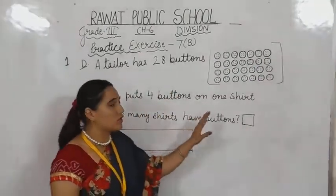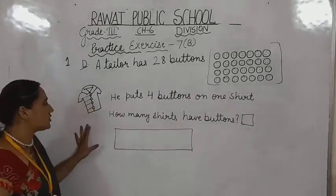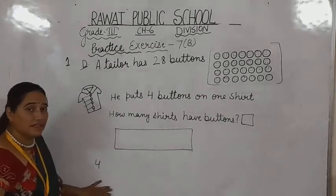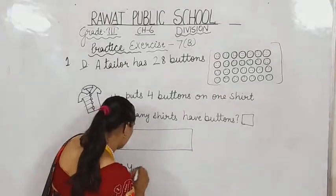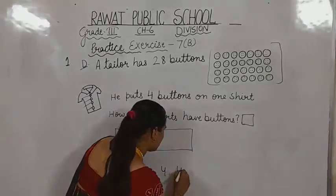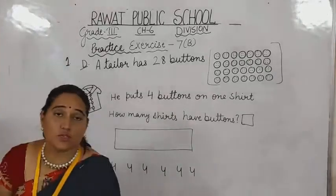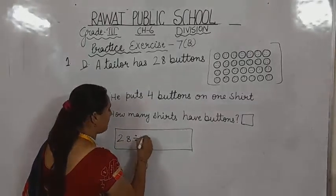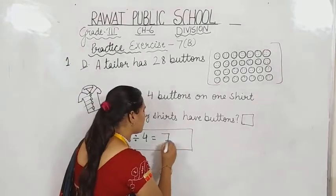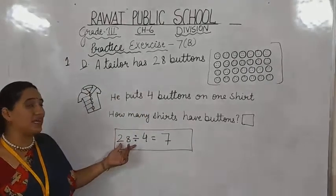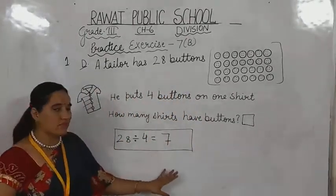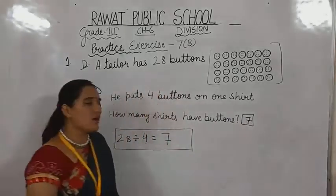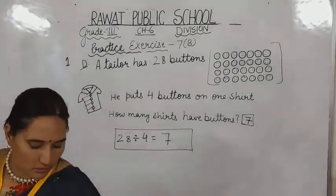He puts four buttons on one shirt. If he is putting four buttons on one shirt, how many shirts have buttons? Four buttons per shirt: four, four plus four, four, four, four — one, two, three, four, five, six, seven. Seven times four is 28. So 28 divided by 4 equals 7. Seven shirts have buttons.